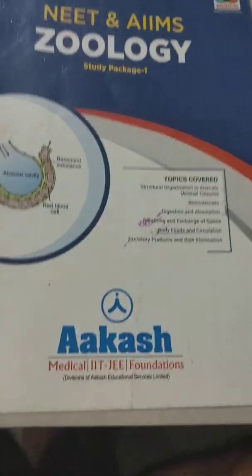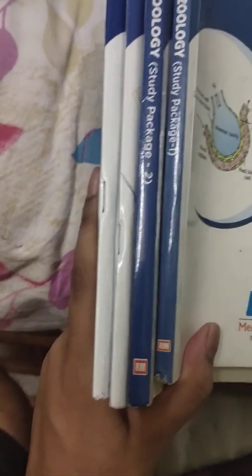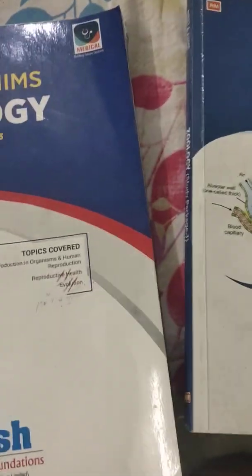Now comes to zoology. The entire zoology syllabus is divided into four modules. This is first, this is second, this is third, and this is the fourth one.